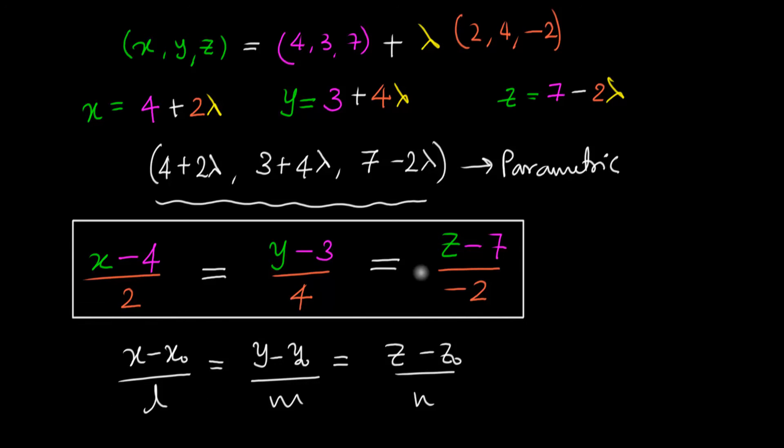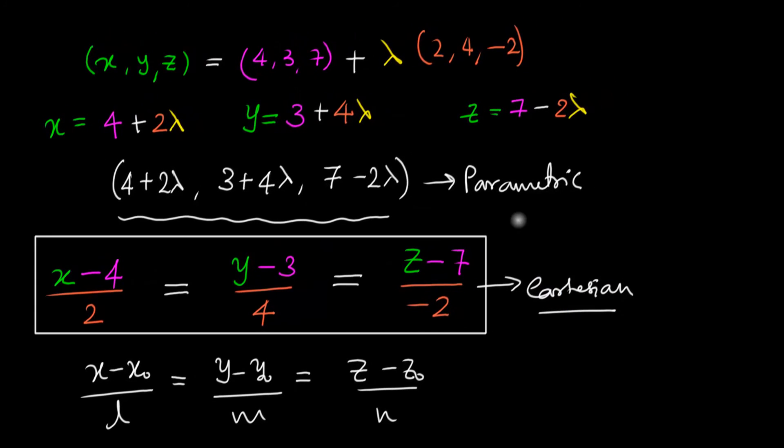So I've given you three ways of representing a straight line. The Cartesian form, the parametric form, and this is going to be useful. You know why? Because at times we'll want to calculate, at times we'll want to write a general point on a straight line.